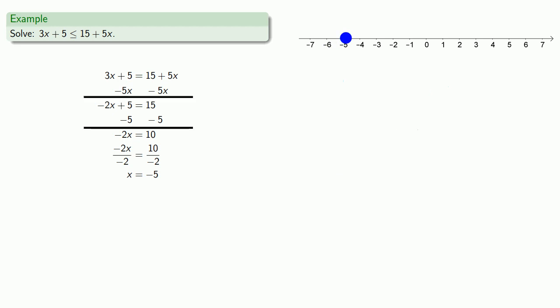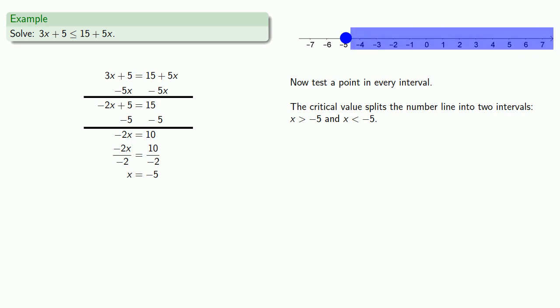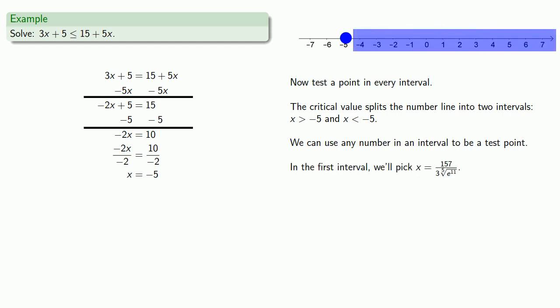Now that we have the critical value, we want to test a point in every interval. And here, notice that the critical value splits the number line into two intervals, x greater than negative 5, and x less than negative 5. We could use any number in an interval to be a test point. So in this first interval, we can pick, how about 0, that's an easy number to work with.